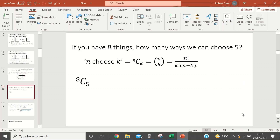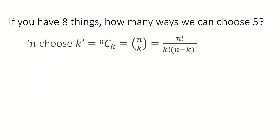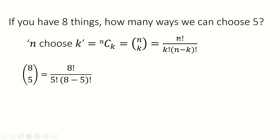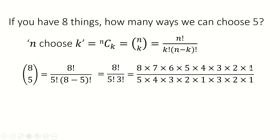Just before we finish up, I do want to show you that this is quite nice to work out by hand, because I find it really satisfying. We have n factorial over k factorial times n minus k factorial, so 8 choose 5 is 8 factorial over 5 factorial times 3 factorial. Something really nice happens: if I write the factorials out properly, everything below 5 in the numerator cancels with the 5 factorial in the denominator. Then 3 factorial — which is 3 times 2 — cancels with the remaining 3 factorial on the bottom. So all I actually have to do is 8 times 7 divided by 1, which is 56. I find working out choose functions by hand very satisfying — if you don't, that's absolutely fine, but you're a loser.